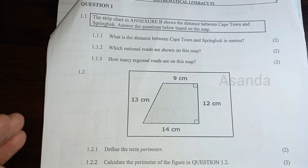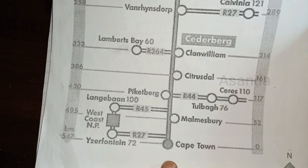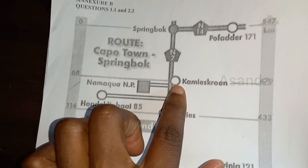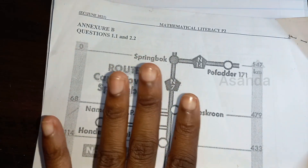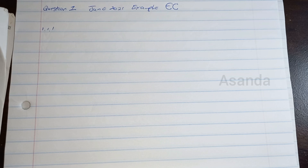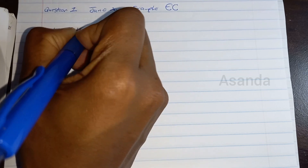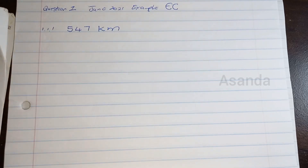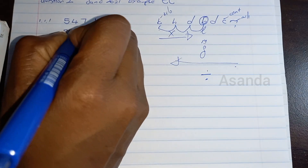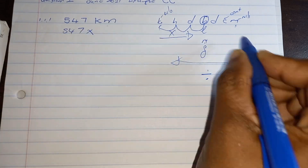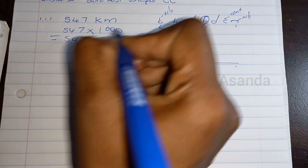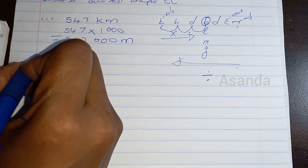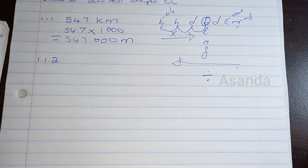Question 1.1.1: What is the distance between Cape Town and Springbok in meters? From the strip chart, the distance is 547 kilometers. They want it in meters, so we convert: going from big to small we multiply by 1,000, giving us 547,000 meters.